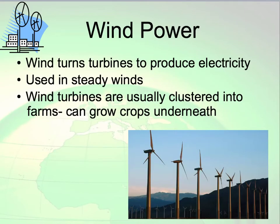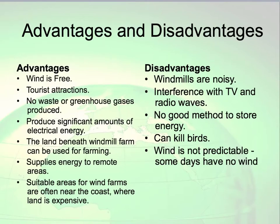Wind power also uses a turbine — the wind turns the turbine to produce electricity. Advantages: wind is free, there is no waste or greenhouse gases, and it is really good for wind farms near the coast because there is always a breeze coming in. Disadvantages: wind turbines can be noisy, there is no good method to store wind energy, and they can actually kill birds.